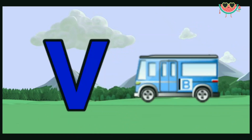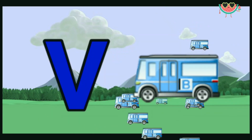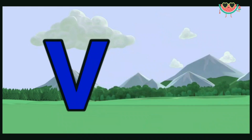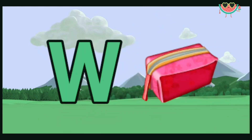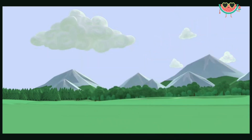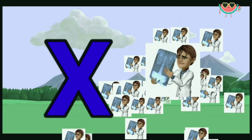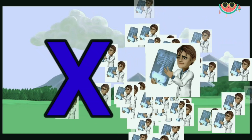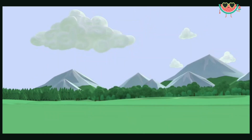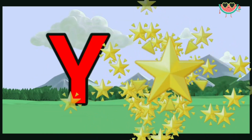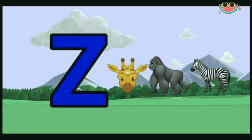B for wand. W for wallet, D for wallet. X for x-ray. Y for yellow. Z for two.